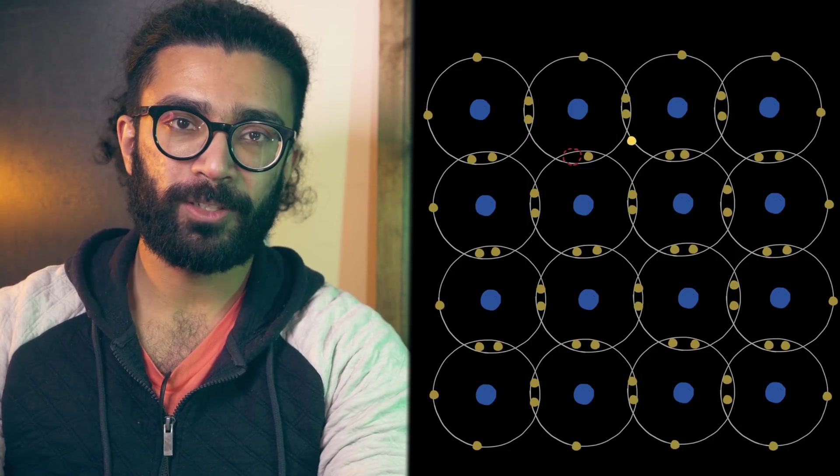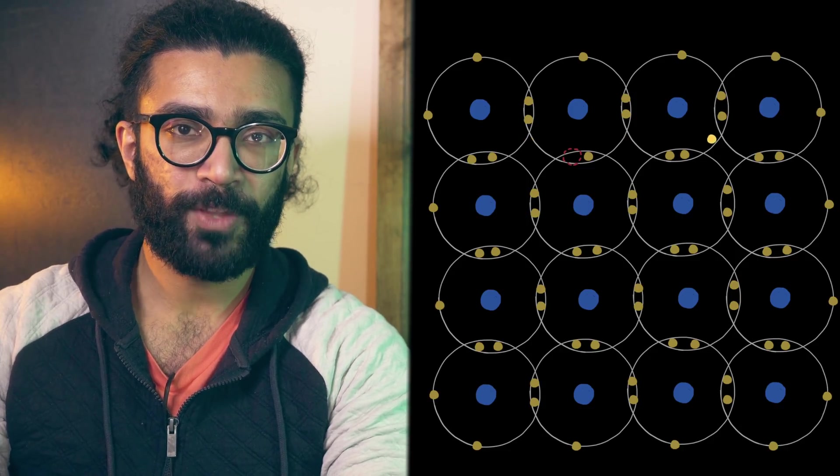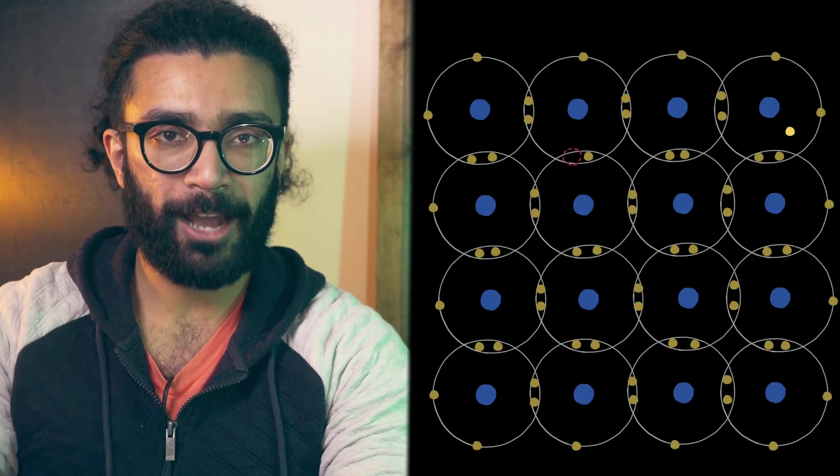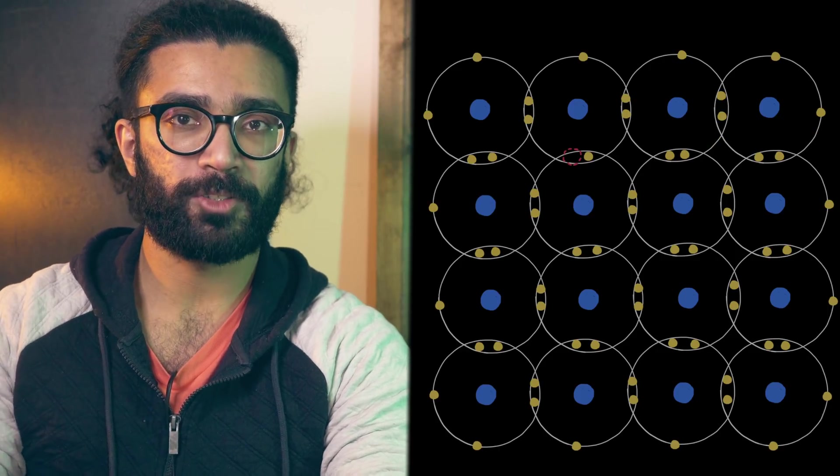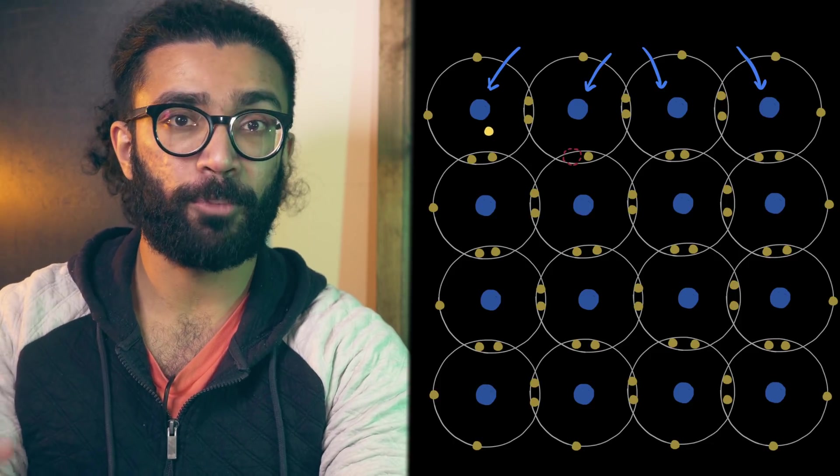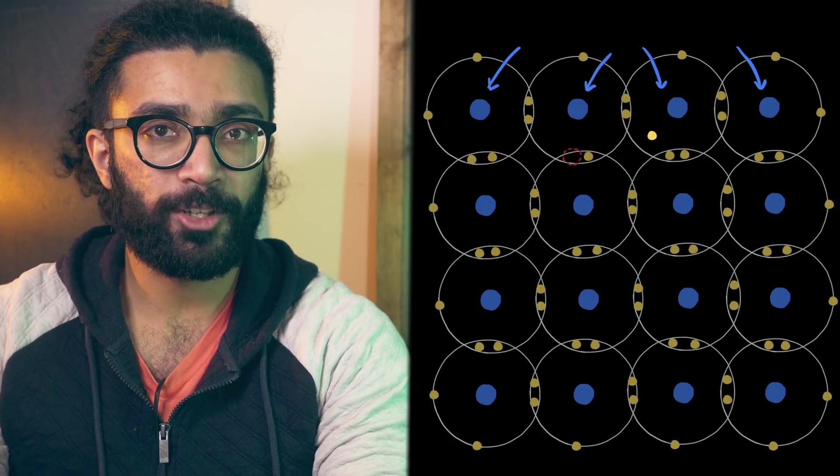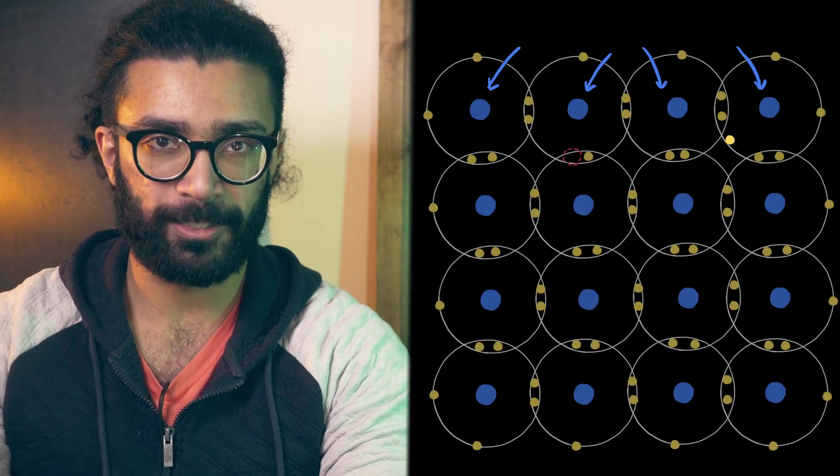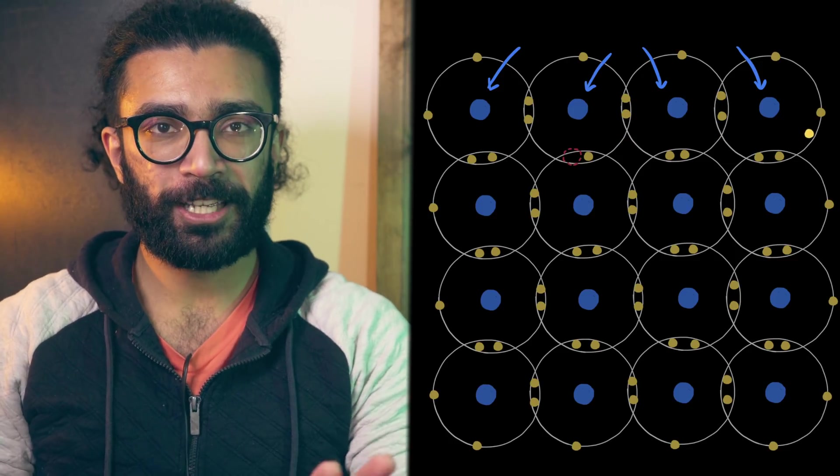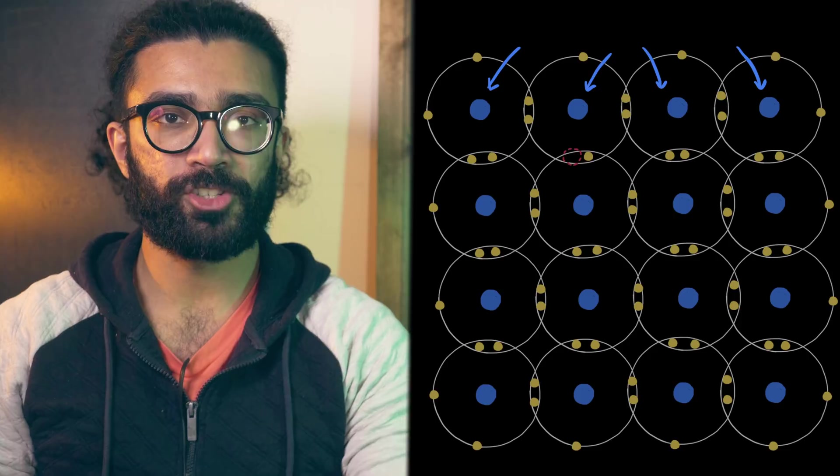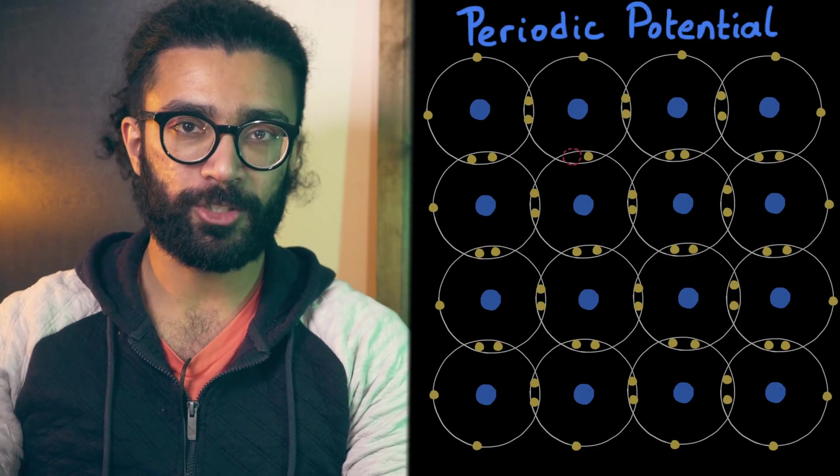If we think about a single electron moving through this material, then we would need to study how it behaves as a result of the regular arrangement of positive charges that it passes through, the nuclei, as well as all the electrons it ends up interacting with. By the way, this regular arrangement of positive charges is sometimes called a periodic potential.